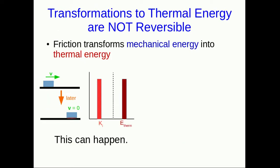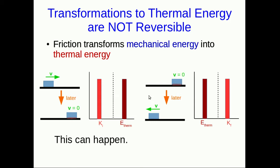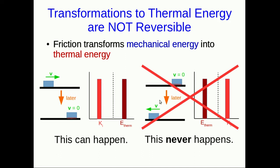The reason it's so important to distinguish between mechanical energies — which can transform back and forth easily — and other forms of energy, is that this reversibility doesn't apply to other forms, in particular thermal energy. Friction will transform the kinetic energy of a block into thermal energy, and in general will transform various forms of mechanical energy into thermal energy. But the reverse is not true — you would be very surprised if a warm block sitting on the floor suddenly cooled down and started moving. Transformations to thermal energy are not reversible, and this makes thermal energy fundamentally different from mechanical energy.